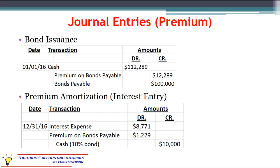It's important to know we are under the straight-line method of bond amortization. First, we look at what we would credit for cash — we're going to pay cash, so we credit cash for the actual cash interest we pay. This example is a 10% bond, so $100,000 times 10% means we are actually going to pay $10,000 in cash.